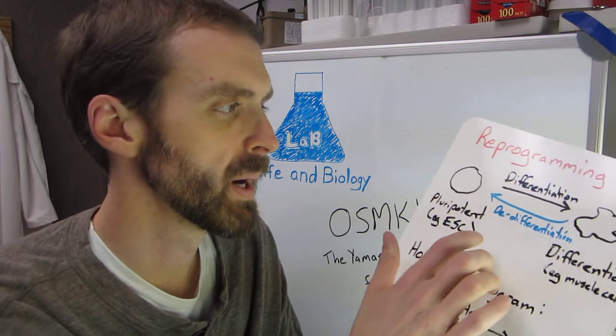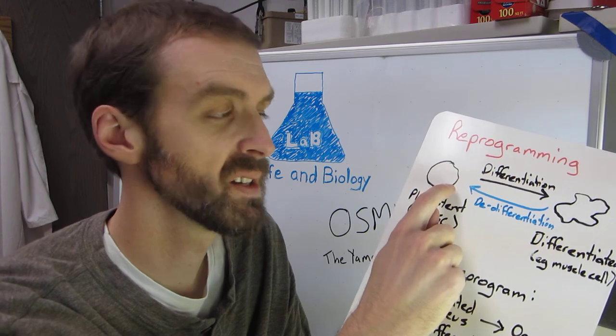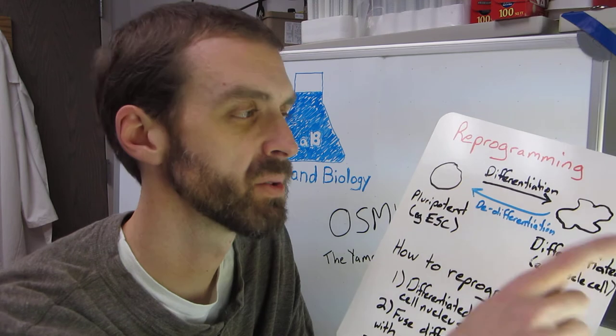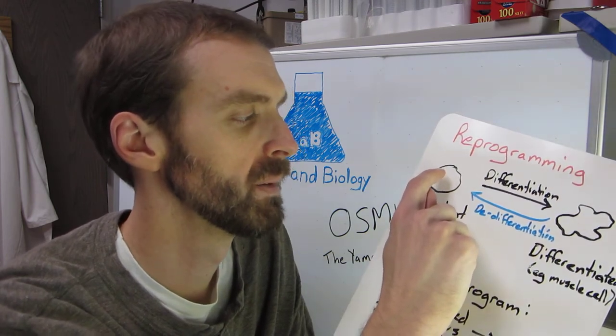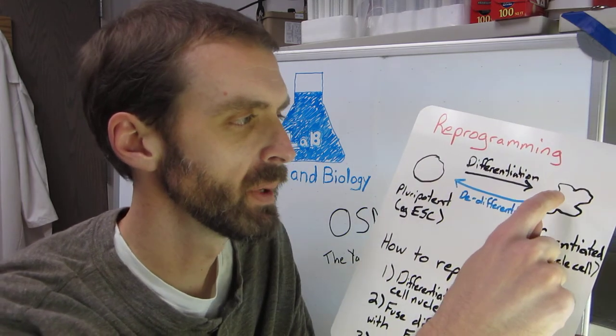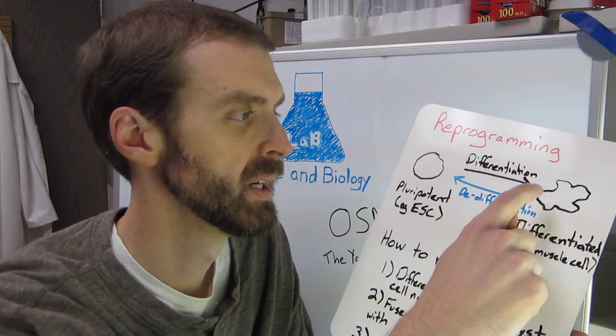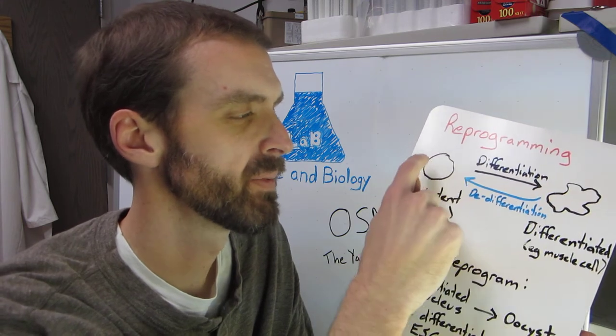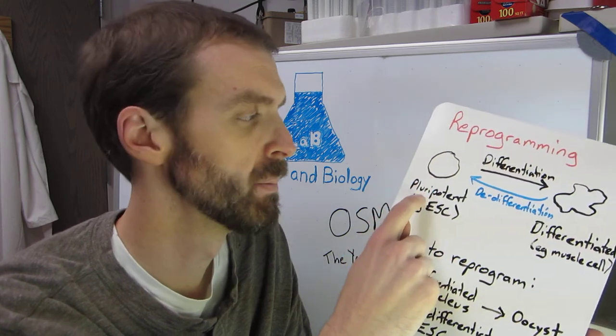So we're going to talk about reprogramming. So differentiation is when you take a cell that has the ability to turn into different sorts of cells and turn them into different sorts of cells. So there's a differentiation process or a maturation that goes on as you go from pluripotent to final differentiated state. Now what they were looking into in the paper I'm going to talk about today, that Yamanaka was the senior author on, was different ways of de-differentiating. So you take this differentiated cell and go back to something that has pluripotent potential.